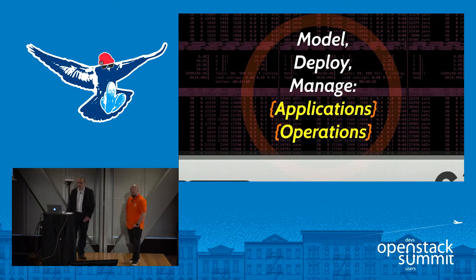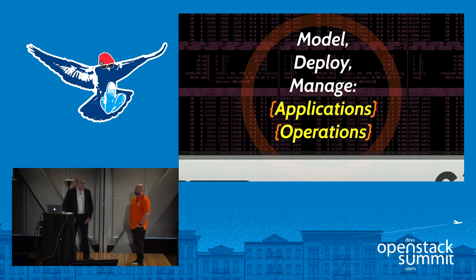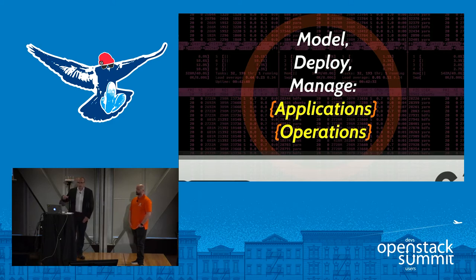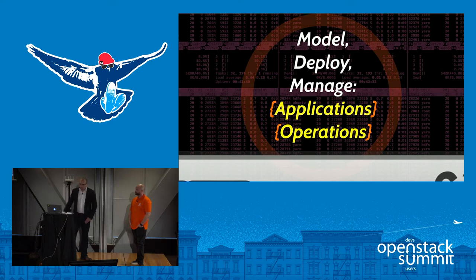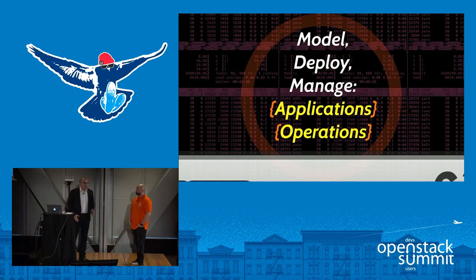There are things that can be done to help make this a little easier on organizations. Modeling is a huge thing — being able to model and deploy and manage these applications while encapsulating the operations in a model is really key. Some of the things that we do with OpenStack and the OpenStack charms have been done in parallel with the Hadoop big data charms. We need to be able to deploy and model and manage these applications on multiple substrates.